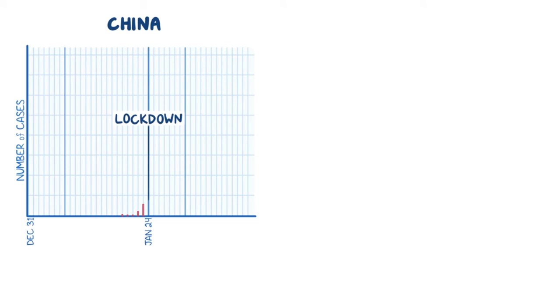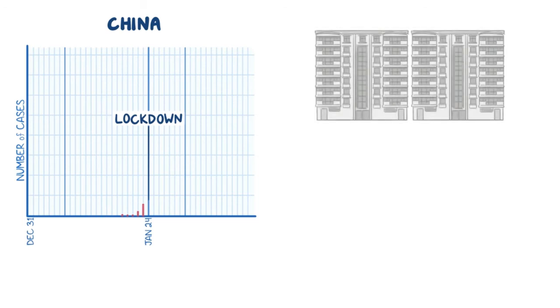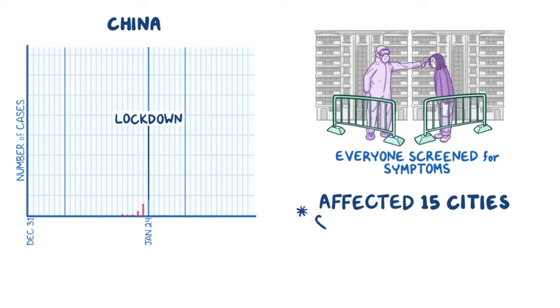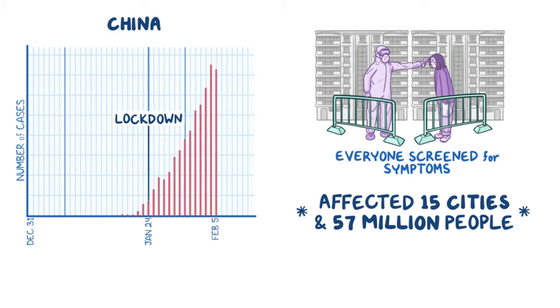Going even further, some communities enforced a system by which there was only one entrance and exit, and everyone passing through was screened for symptoms of COVID-19. If anyone in the community tested positive, the entire community might be quarantined. In all, this affected 15 cities and about 57 million people. The measures were swiftly enacted and strictly enforced, and 12 days later, on February 5, the exponential growth broke and the number of new cases started to fall off.